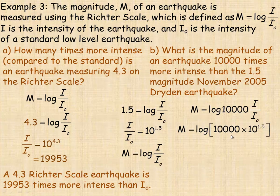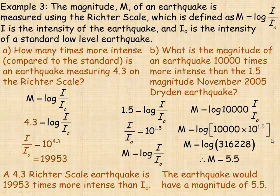And so this becomes a calculator exercise. Evaluate 10 to the power of 1.5 and multiply it by 10,000. And that's 316,228. So if we take the logarithm of this, we get about 5.5. So this earthquake would have a magnitude of 5.5 on the Richter scale that's 10,000 times bigger than this one.